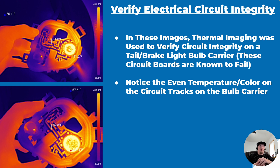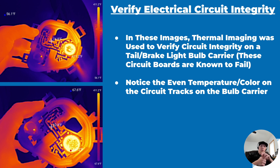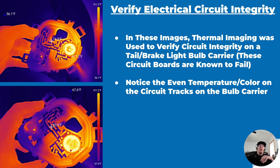Another thing you can do with your thermal imager is verify the integrity of an electrical circuit. This is actually a bulb carrier on a Volkswagen. The bulb carrier has a bunch of circuit board lattice-looking traces on it that allow voltage and current to travel to the bulbs — two bulbs in this particular carrier. What we want to see is a uniform temperature on all of the circuit board portion of the component while it's active and lit up. As you can see in this case, all of those circuit traces are very uniform in temperature with no obvious hot spot — because this circuit is properly intact and there is no issue.